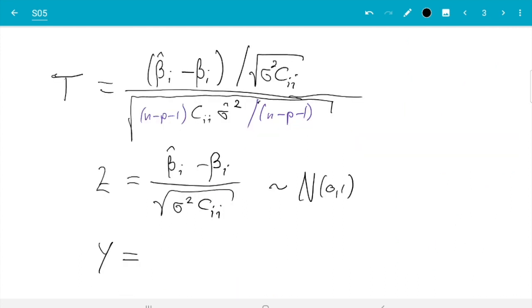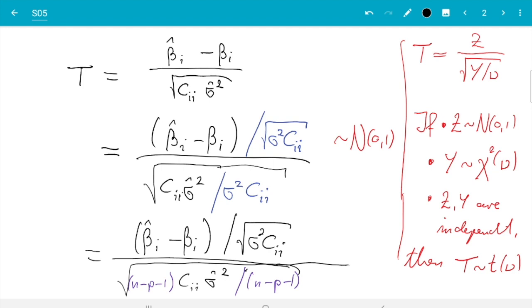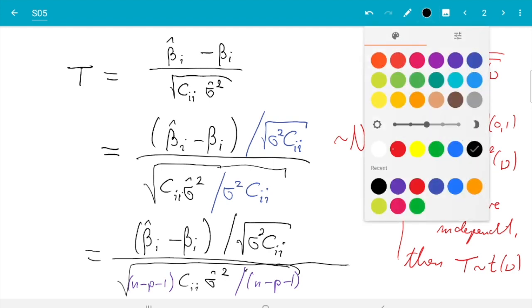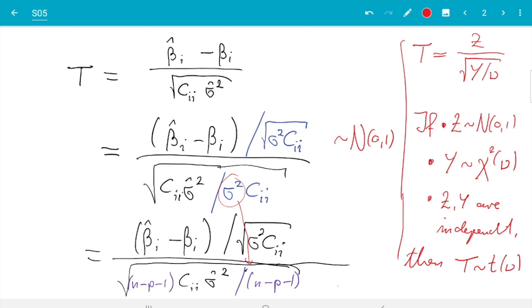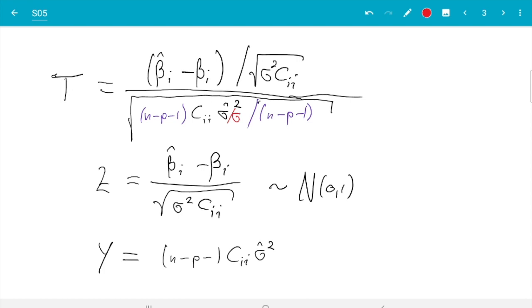So Y if that's going to work will be n minus p minus 1 Cii sigma hat squared. And I just spot another mistake. I fix this in red. This sigma squared I had forgotten to copy over. So we need to also divide by sigma squared here. So we get it divided by sigma squared here and then divided by sigma squared here. And that quantity you can find in equation 4.6, chapter 4 of the notes. This equation we showed is Chi squared distributed with n minus p minus 1 degrees of freedom. So that looks very promising.